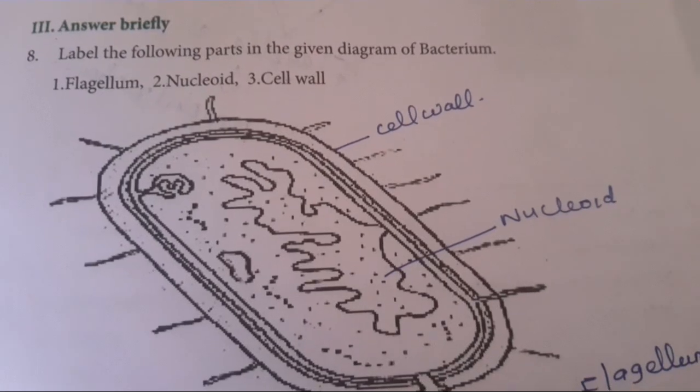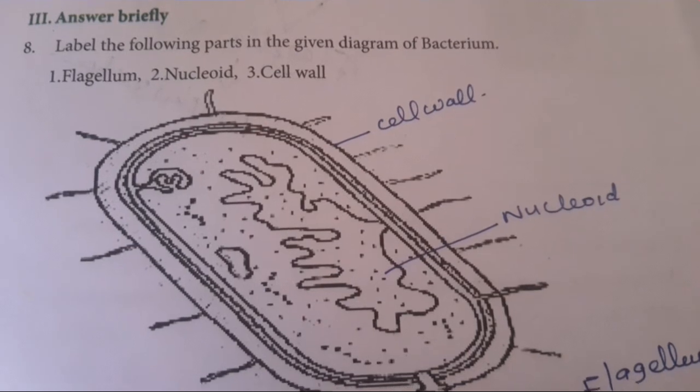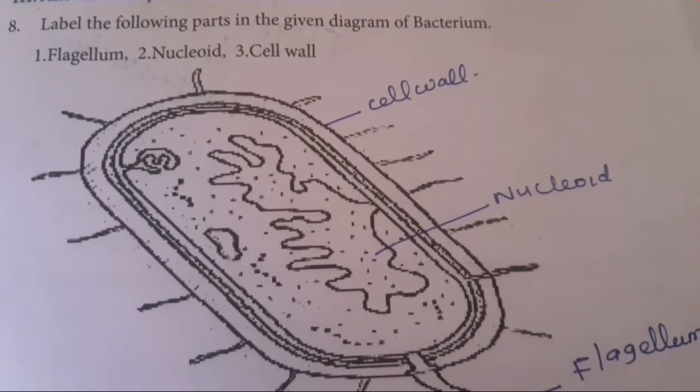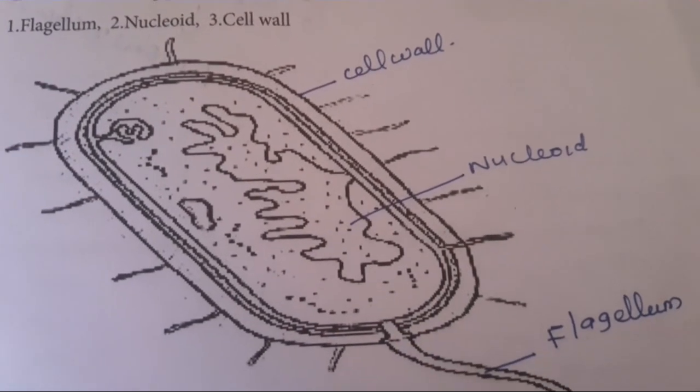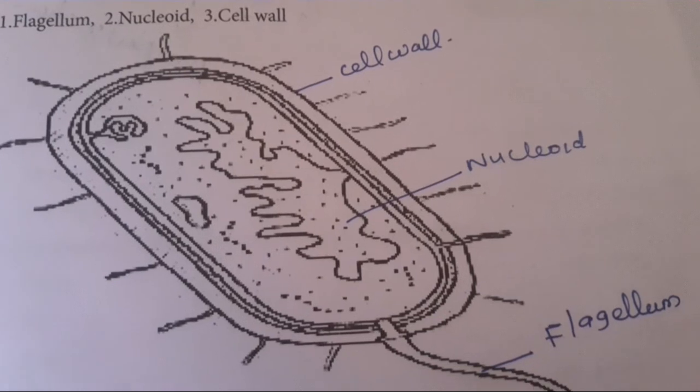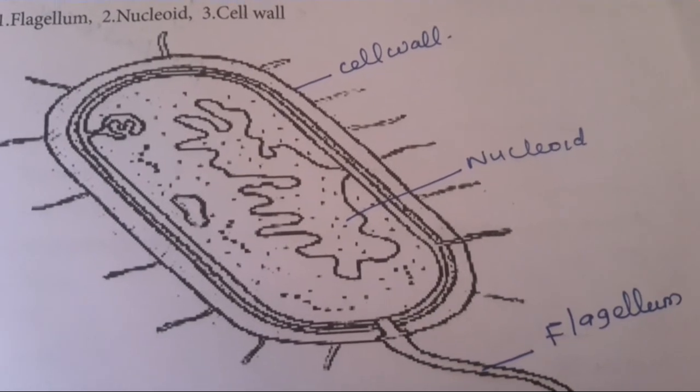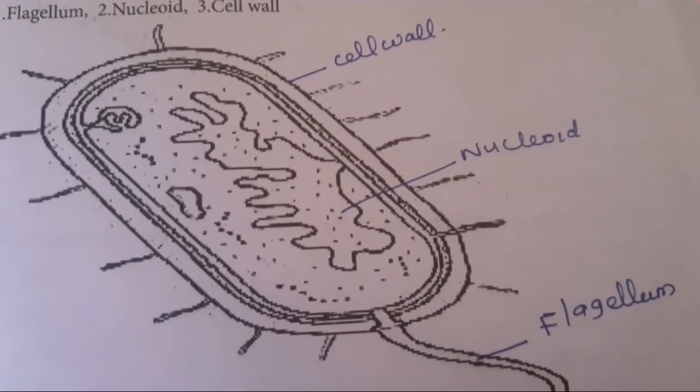Answer briefly. Label the following parts in the given bacterium diagram. The parts are: cell wall, nucleoid, and flagellum.